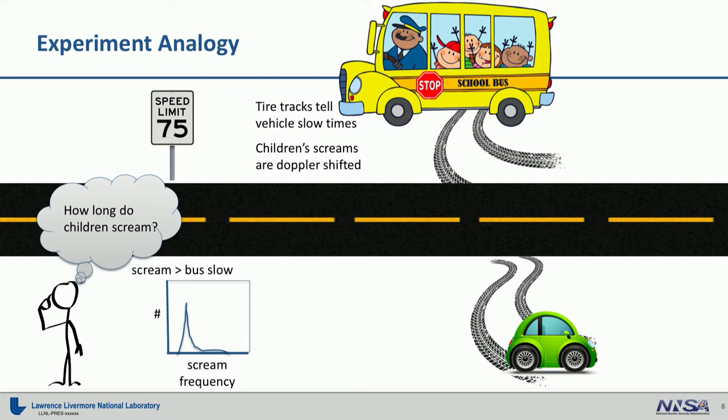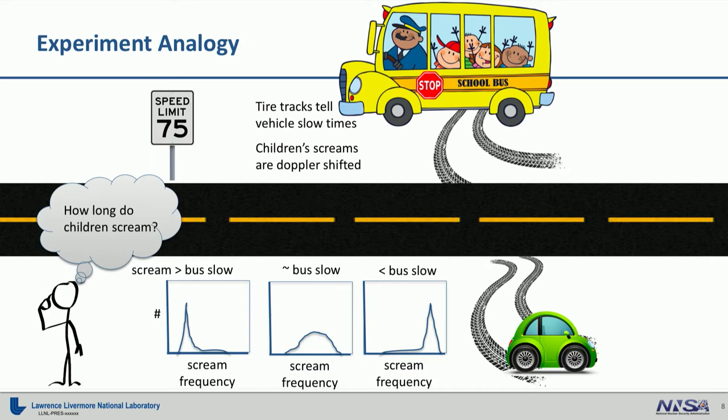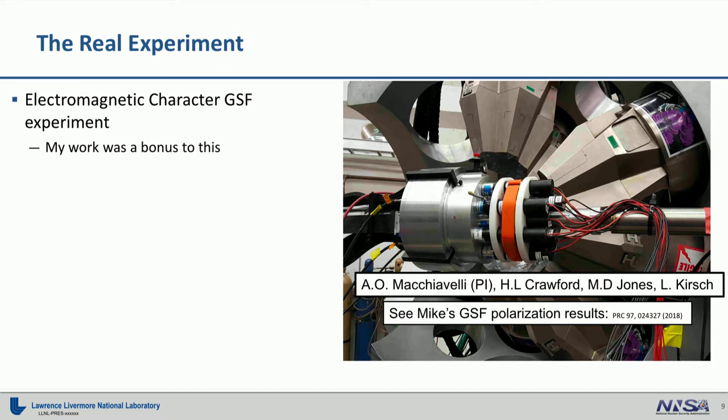And so, you know, the distribution of scream frequency, if it takes very long for the children to scream, then they're going to be screaming while the bus is still stopped. If they scream on a very short time scale, then their screams are going to be much higher pitch, because they're screaming while the bus is still in motion. And if the scream frequency is kind of distributed, then it's on the order of the bus slowdown time. So, now for the real experiment.